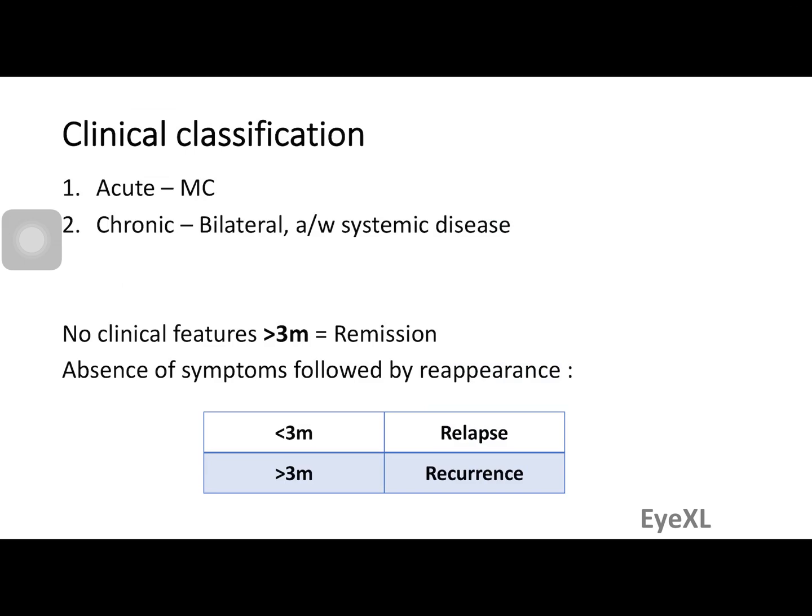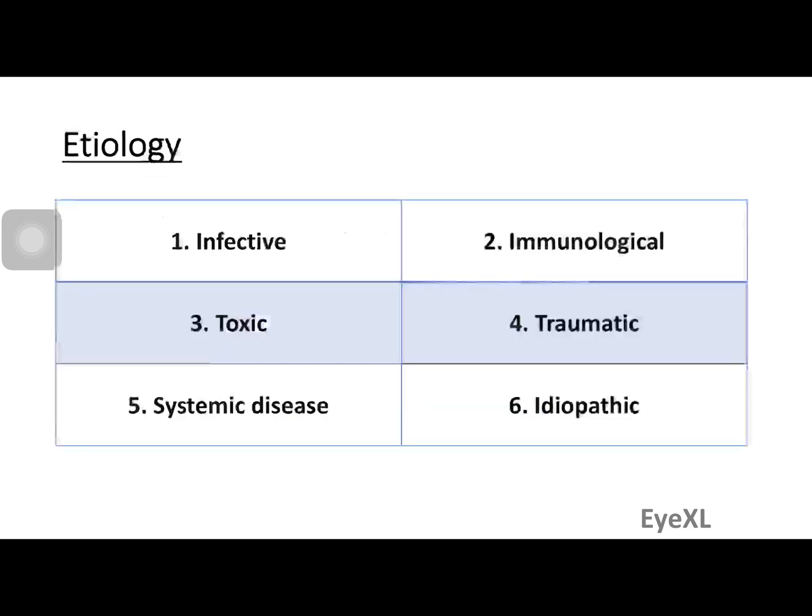If the patient has no clinical features for more than three months, either with or without treatment, the patient is said to have gone into remission. If such a patient presents back with disease features after remission, that is called a recurrence. If this happens within three months, it is called a relapse.